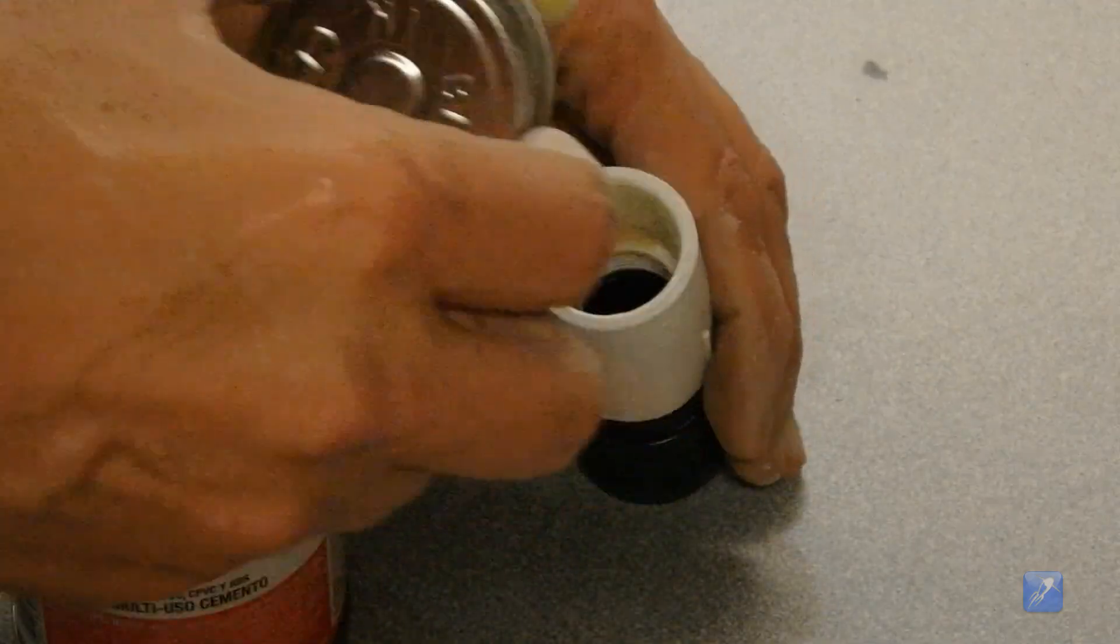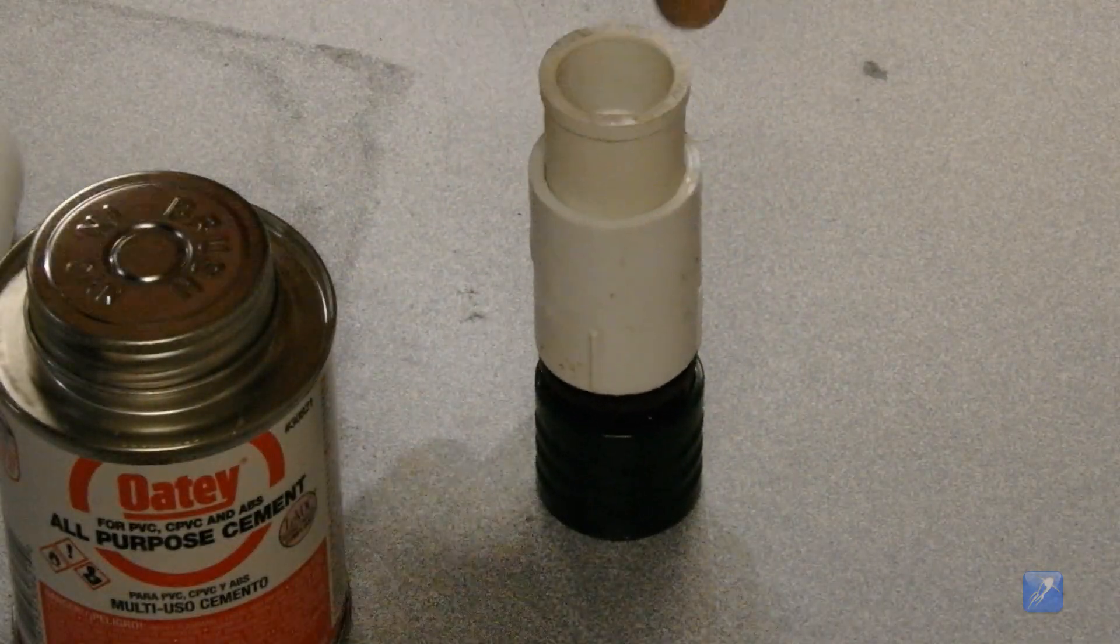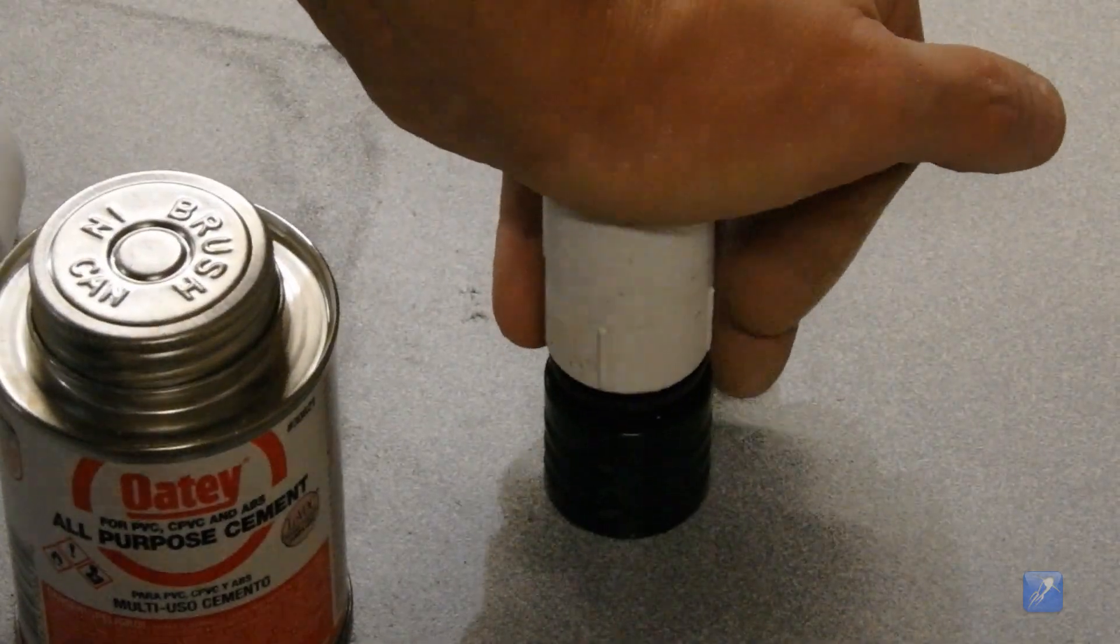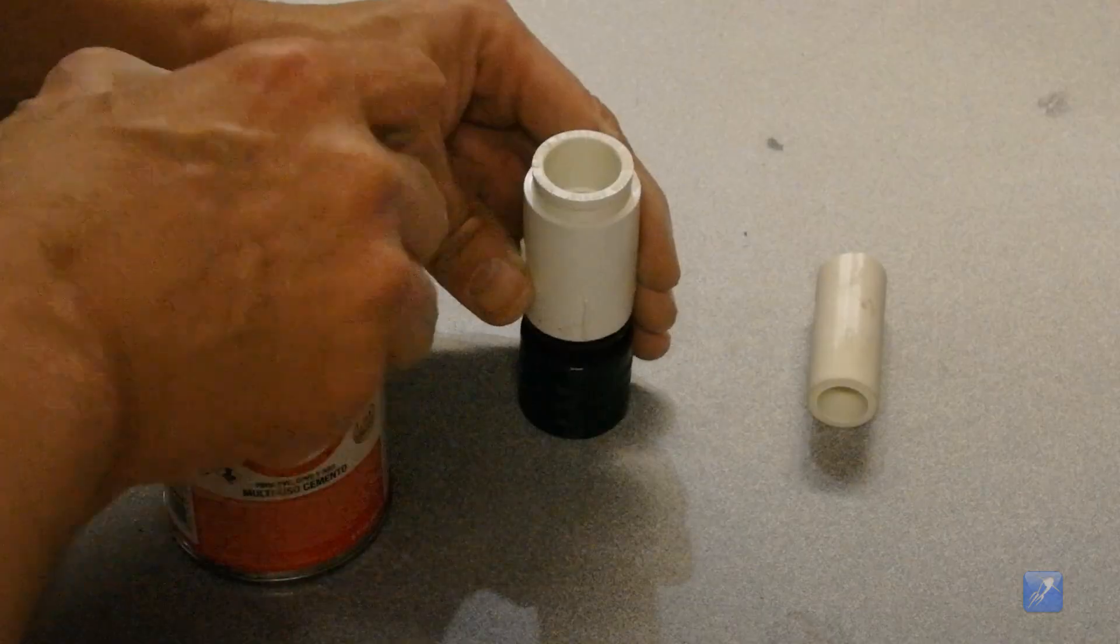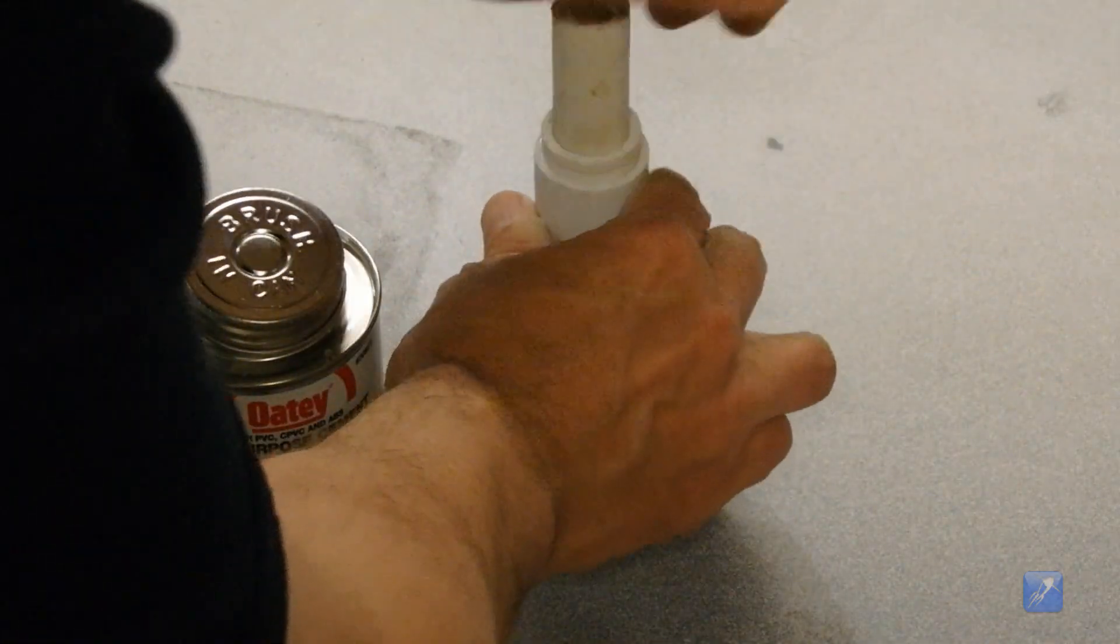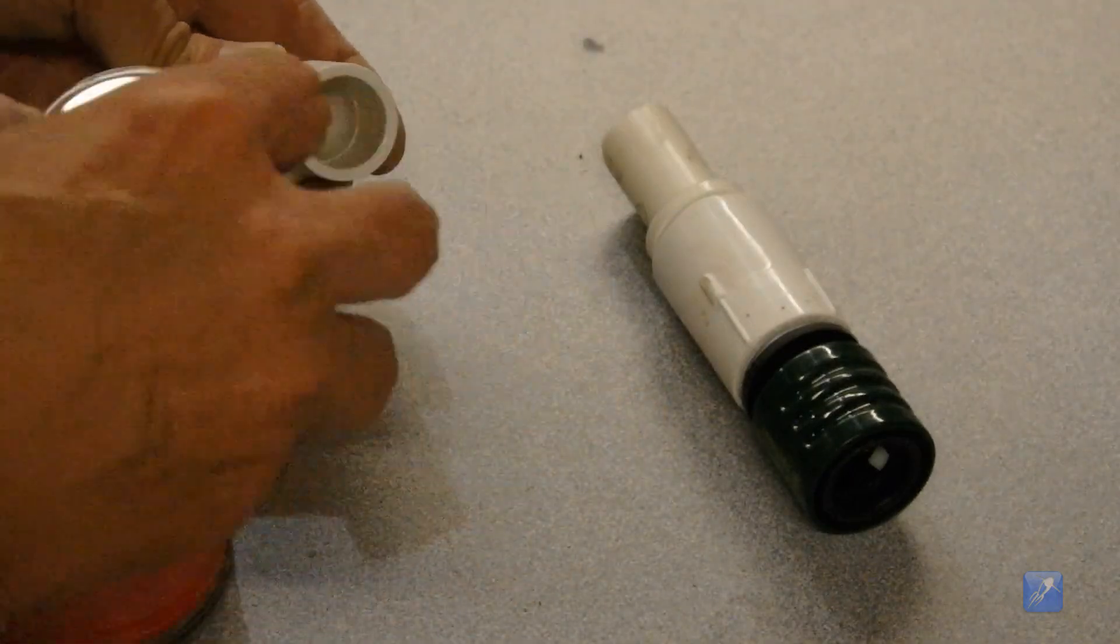Next we glued the ½ inch slip to ¾ inch slip adapter to the release head. Glue the short piece of PVC pipe you just cut into the release head next. You can now glue the ½ inch PVC elbow to the release head.